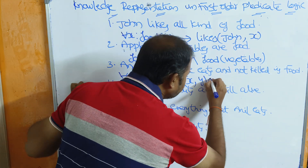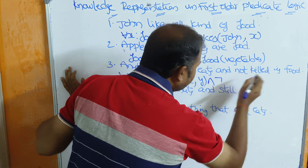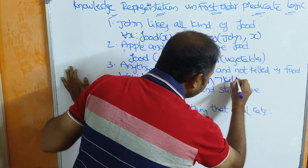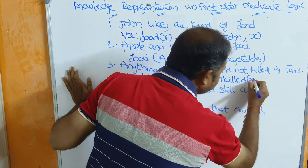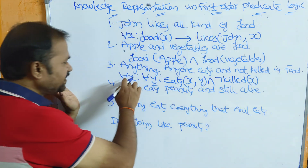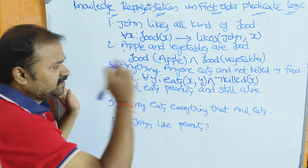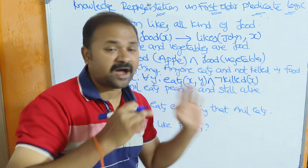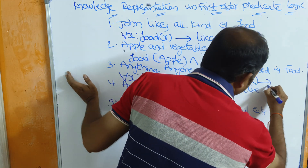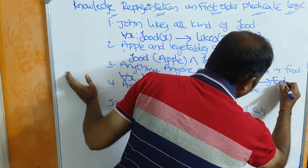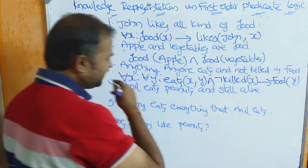Continuing with the third fact: 'and not killed' uses the AND symbol and NOT symbol. Killed is the predicate — killed(x), where x is the person. Since we have a universal quantifier, we use the implication symbol. So the formula is: for all x, for all y, eats(x, y) ∧ ¬killed(x) → food(y).